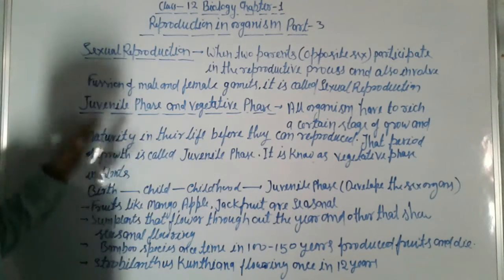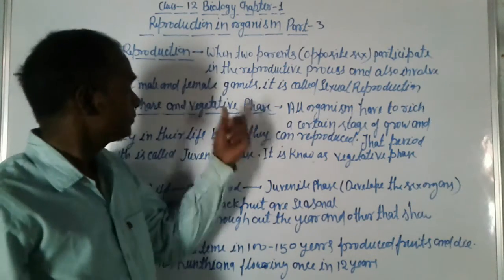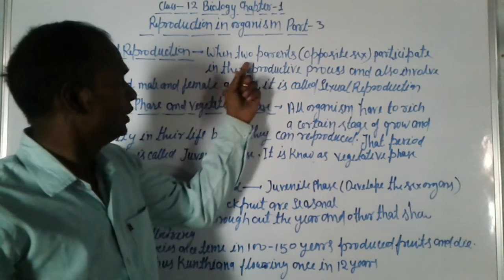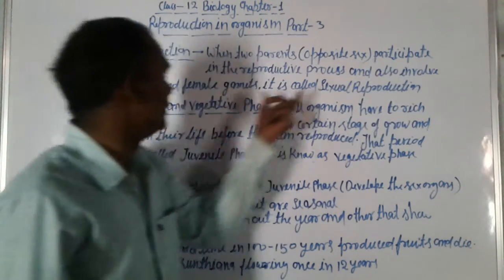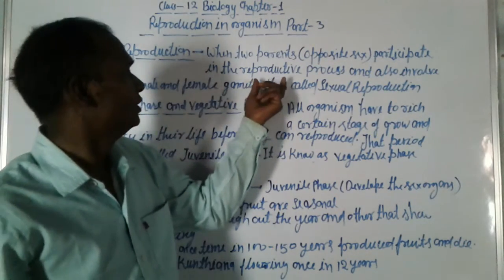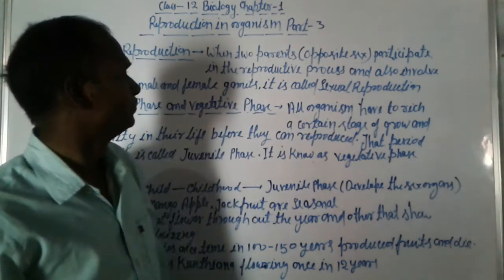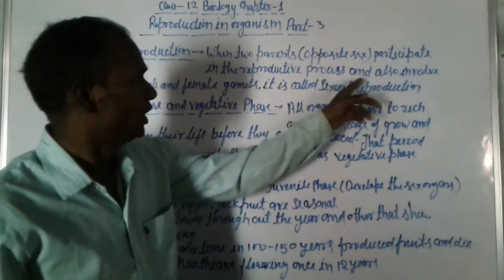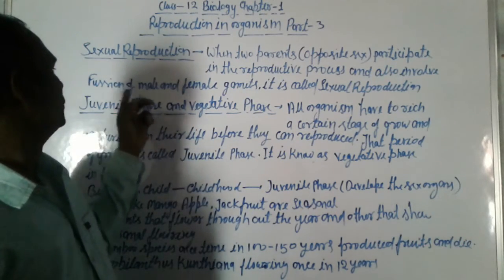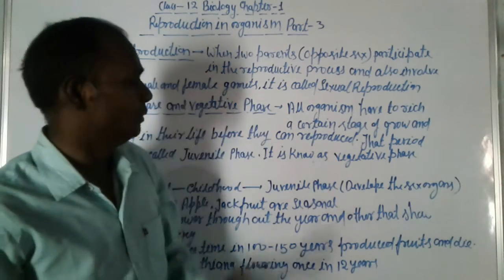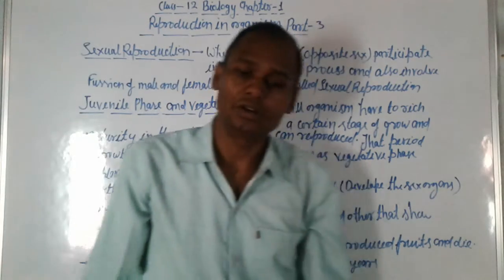Let us start now. Sexual reproduction — what is sexual reproduction? When two parents of opposite sex participate in the reproductive process and also involve fusion of male and female gametes, it is called sexual reproduction.